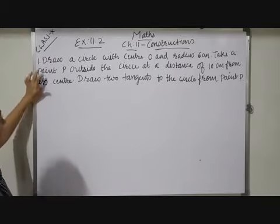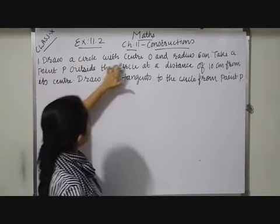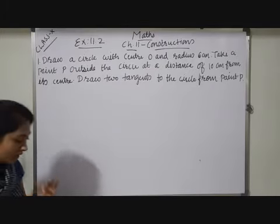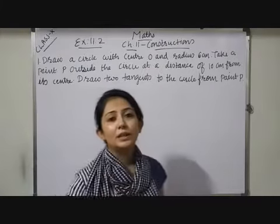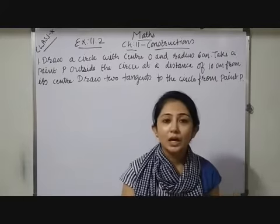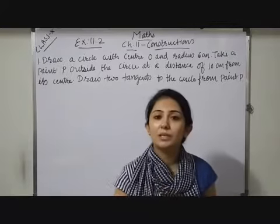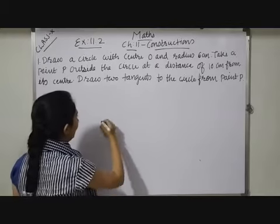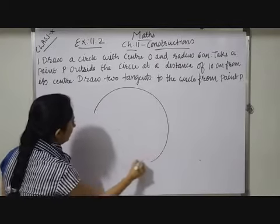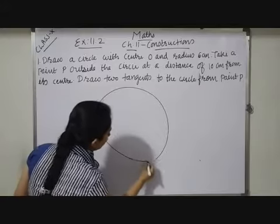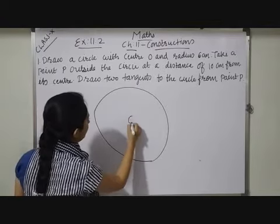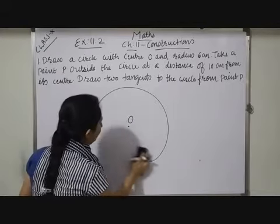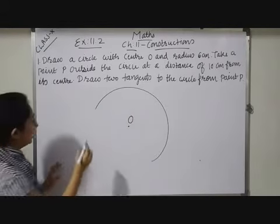See, the question is draw a circle with center O and radius 6 cm. So what I should do? On my rounder using ruler I will take 0 to 6 cm distance. Now fix up rounder somewhere here and draw a circle with radius 6 cm with center O. When you complete this construction using rounder you will get your exact circle.